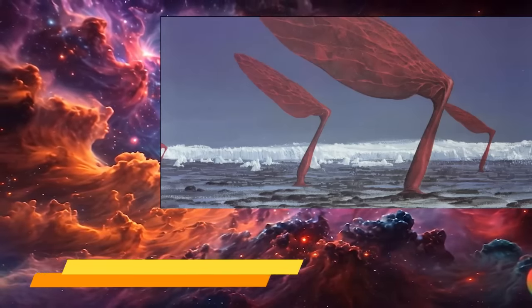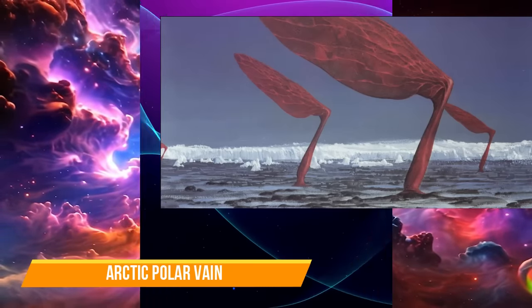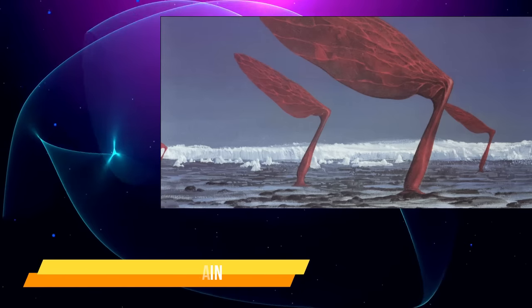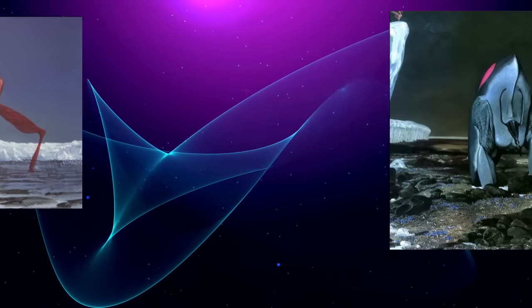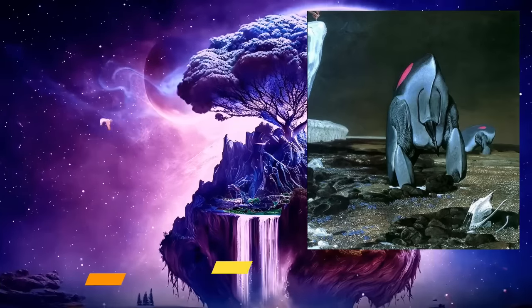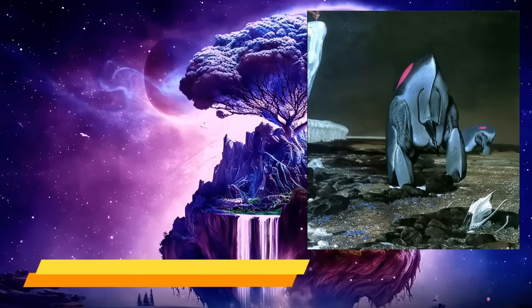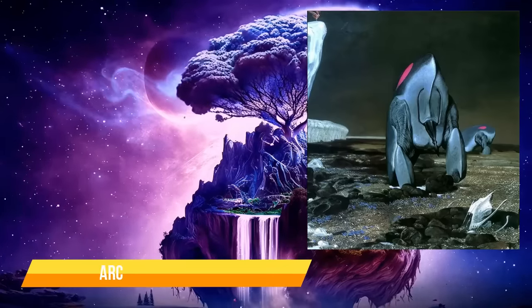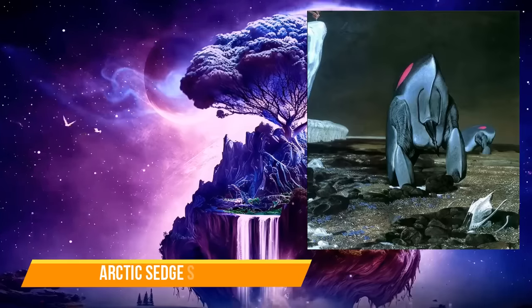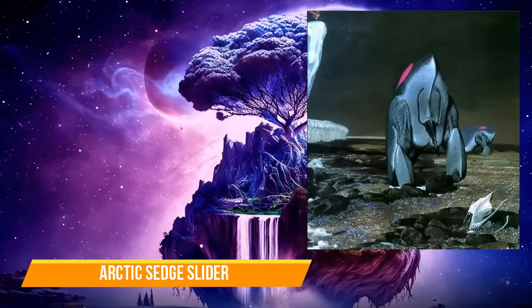Arctic Polar Veins are plants that inhabit the polar region of Darwin 4. They rotate, feeding on energy produced from solar winds from Darwin's two suns. The Arctic Sedge Sliders are massive organisms, bipeds standing 10 metres or 33 feet tall, and adapted to life in the cold polar environments of their homeworld. They are bipedal, dragging themselves along with their two front legs, while supporting themselves in the rear with a central skid.